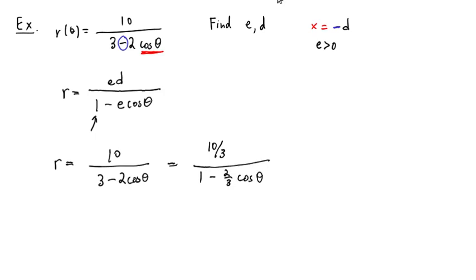And this is good. If we compare this equation with this one, we see now that 2 thirds, that must be the eccentricity. So E has to be equal to 2 thirds to make the denominator match the form that we want.